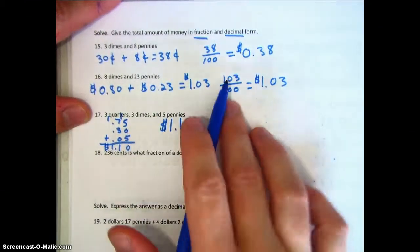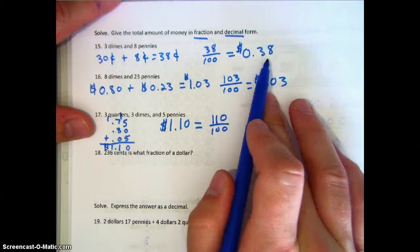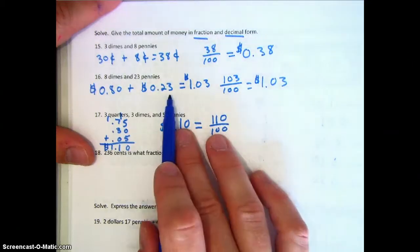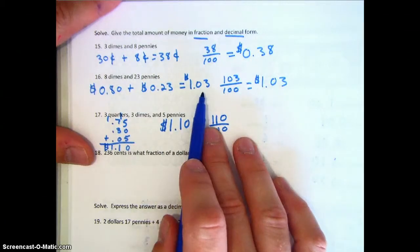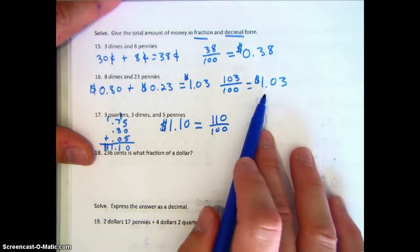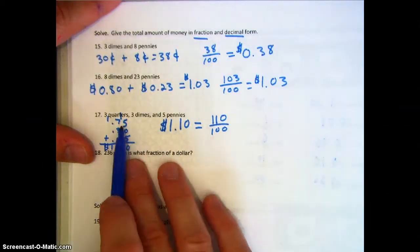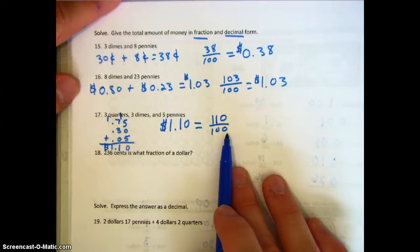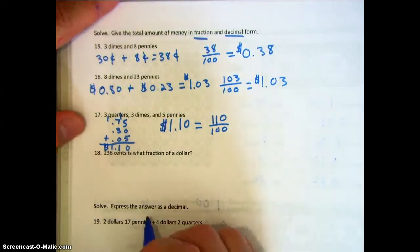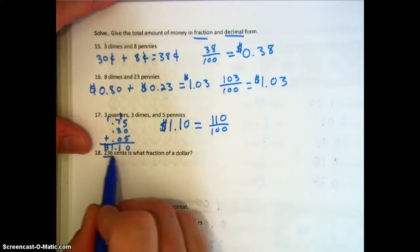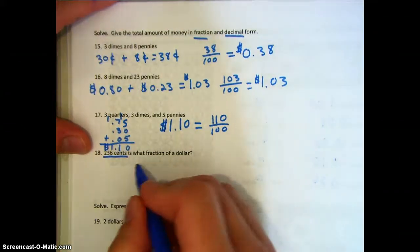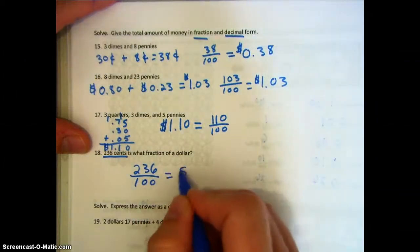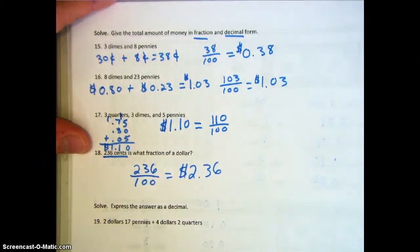You can see your thirty-eight hundredths in fraction form and decimal form. We have our eight dimes and twenty-three pennies, which added up to one dollar and three cents in fraction and decimal form. And then the most recent one, one dollar and ten cents, gives us one hundred and ten hundredths. For number eighteen, we see two hundred and thirty-six cents, which means we have two hundred and thirty-six hundredths of a dollar, which equals two dollars and thirty-six cents.